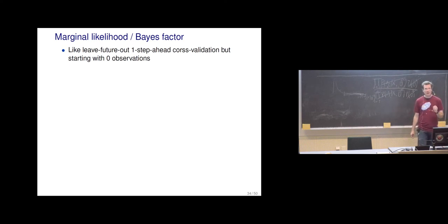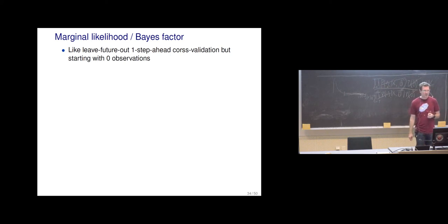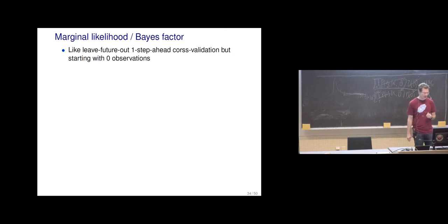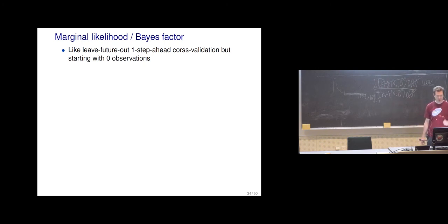The marginal likelihood and Bayes factor — there's a bit of that also in BDA3, mentioning why we don't recommend them in general. One way to think about it is that if you look at this marginal likelihood and use the chain rule, it's like leave-future-out cross-validation but starting with zero observations. You can think that we first try to predict just the first observation based only on the prior — which means this first prediction is sensitive to your prior.